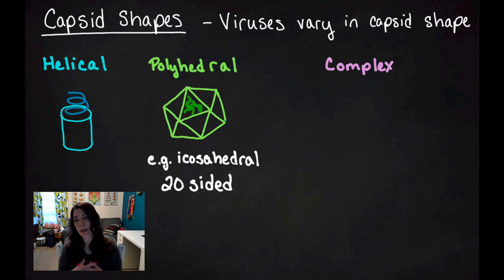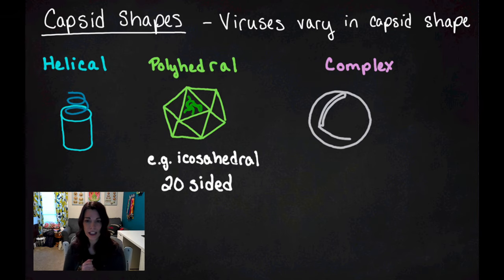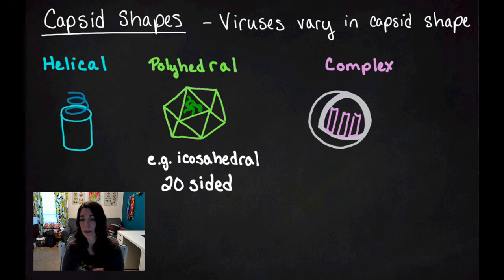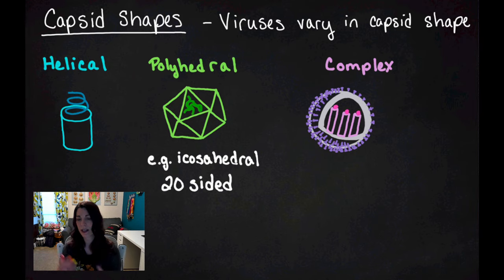And then the last major category is complex. Now sometimes you'll see spherical viruses listed in addition, but we're not going to put them as their own shape and here's why. When we talk about spherical viruses, a spherical virus is typically going to be several different shapes of viruses like polyhedral or helical surrounded by a layer, an envelope.